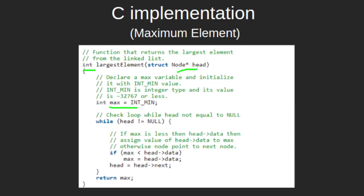We start traversing the linked list, and if the current value of max is less than the current head data, we update max and the current head value is assigned to max. After that we update the head pointer to point to the next node. Once we have traversed the whole linked list — meaning the head pointer becomes null — we return max, which is the maximum element in the given linked list.